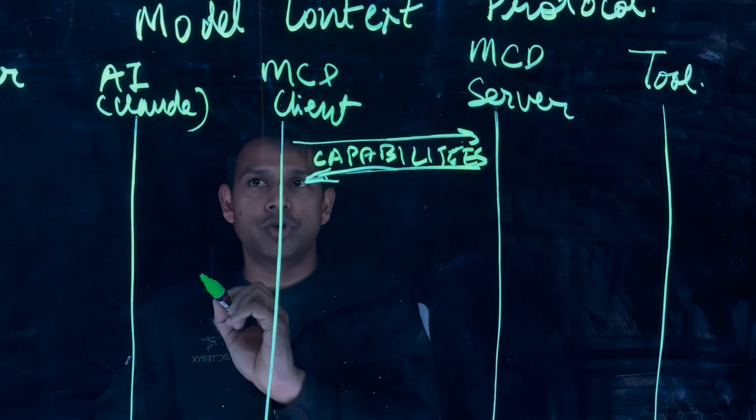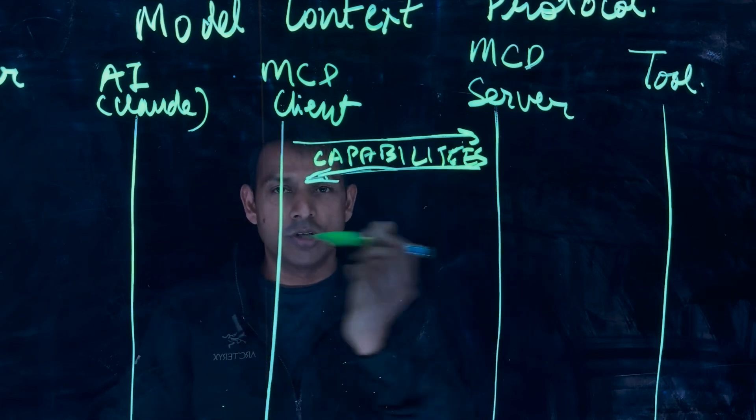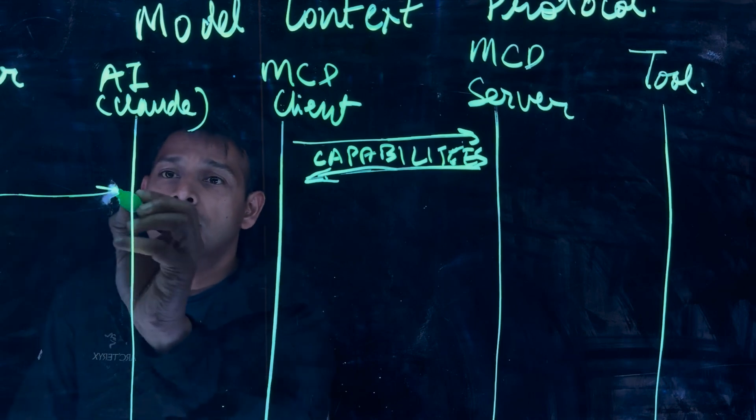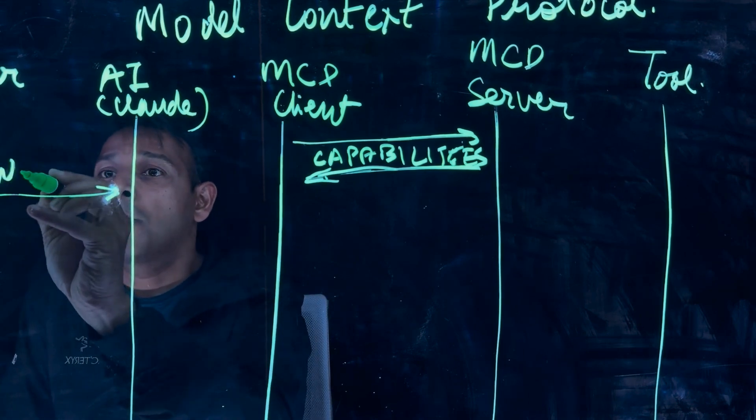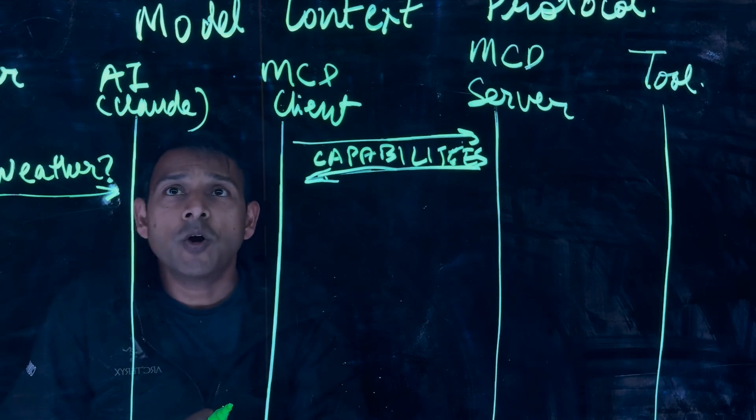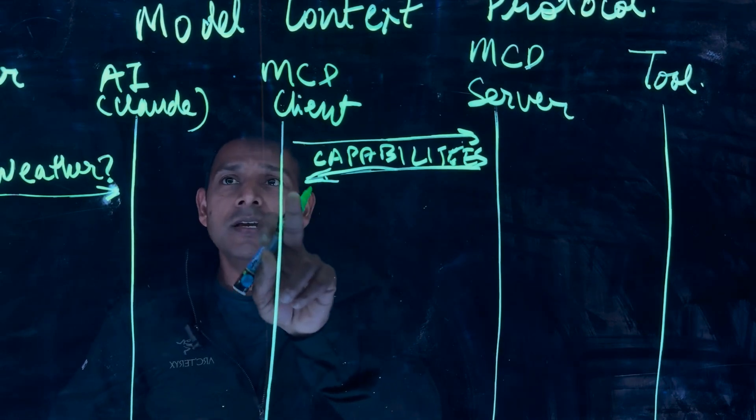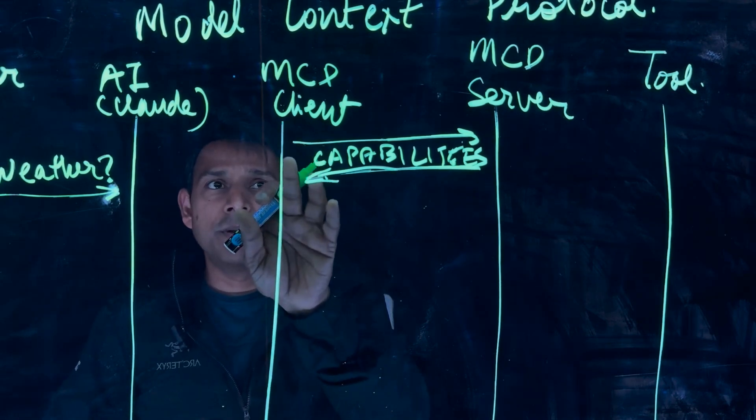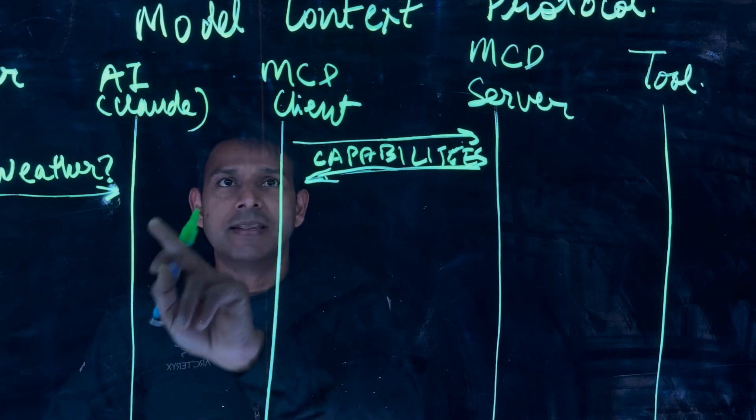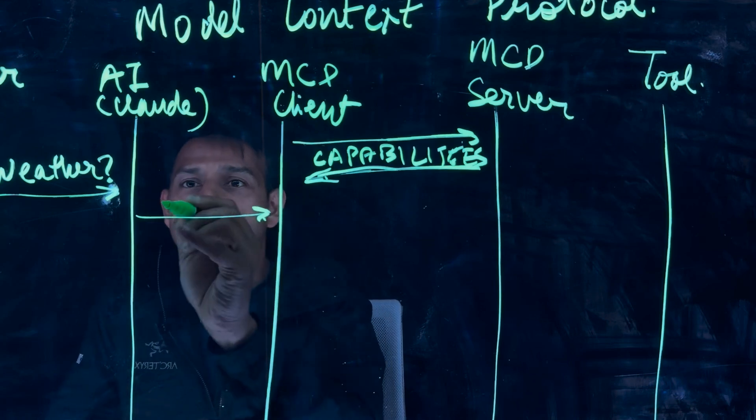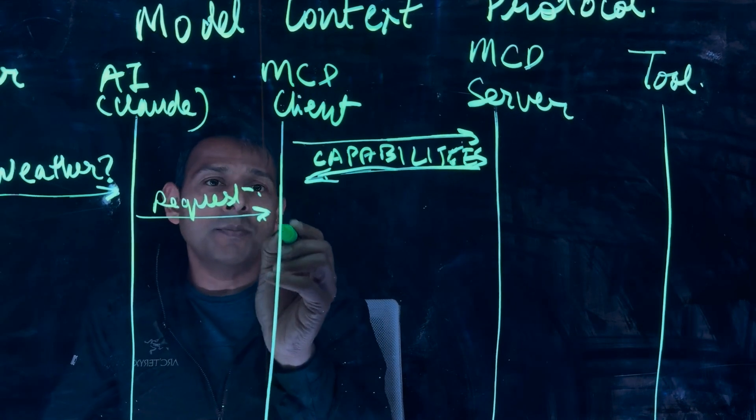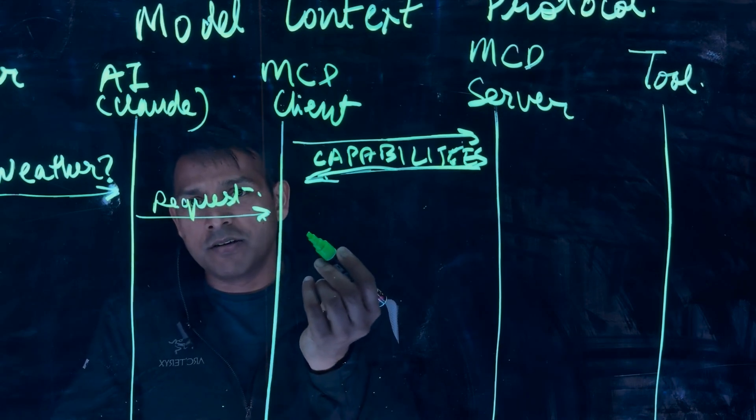Now that this initial capabilities discovery has happened and the registration has happened, the user can ask questions to the AI, right capabilities can be used and responded. Let's see what is the step-by-step there. So let's assume the user asks a question to Claude, what is the weather like? At this point of time, since all the capabilities are registered with the MCP client and this is a single unit, we need to see what tools are available that can answer this weather question. So AI will request for capabilities.